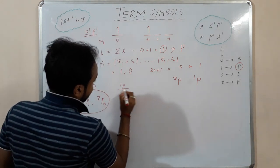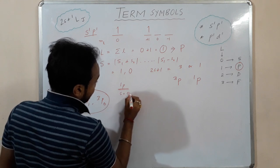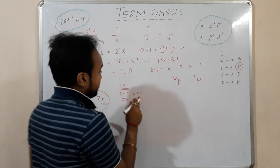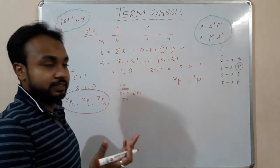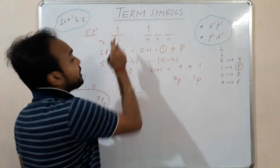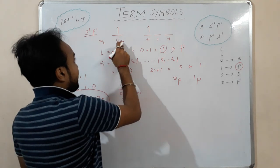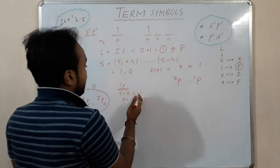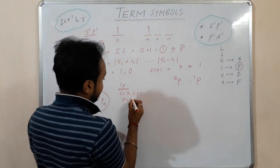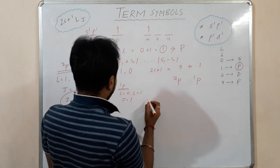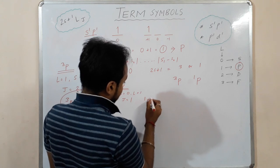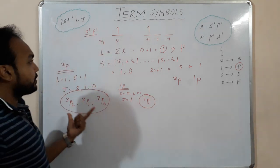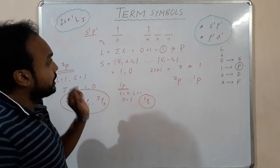For the ¹P term, S = 0 and L = 1. Since it is a half-filled configuration with one electron in the s orbital, J has only one value: J = 1. So we get only ¹P₁.